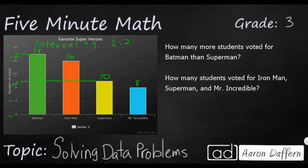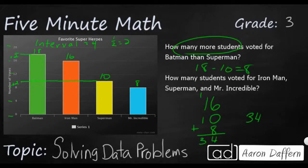So solving these problems becomes pretty simple. How many more students voted for Batman than Superman? Well, that's going to be 18 minus 10. That's eight. Finally, if we add up Iron Man, Superman, and Mr. Incredible, we get 34.